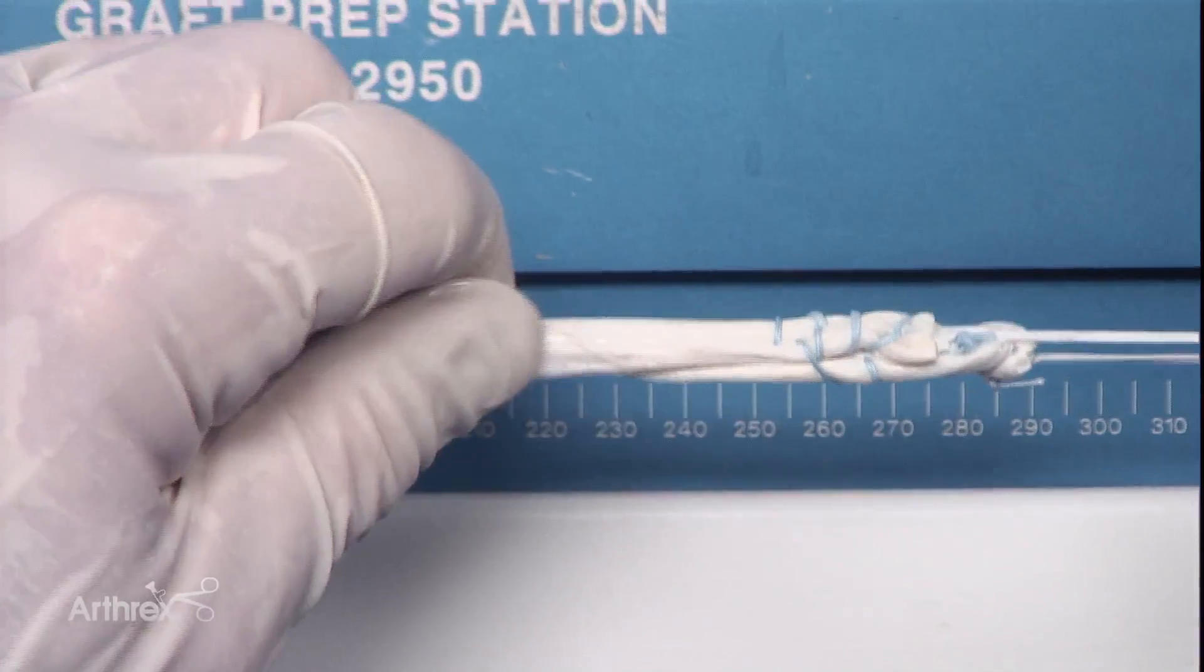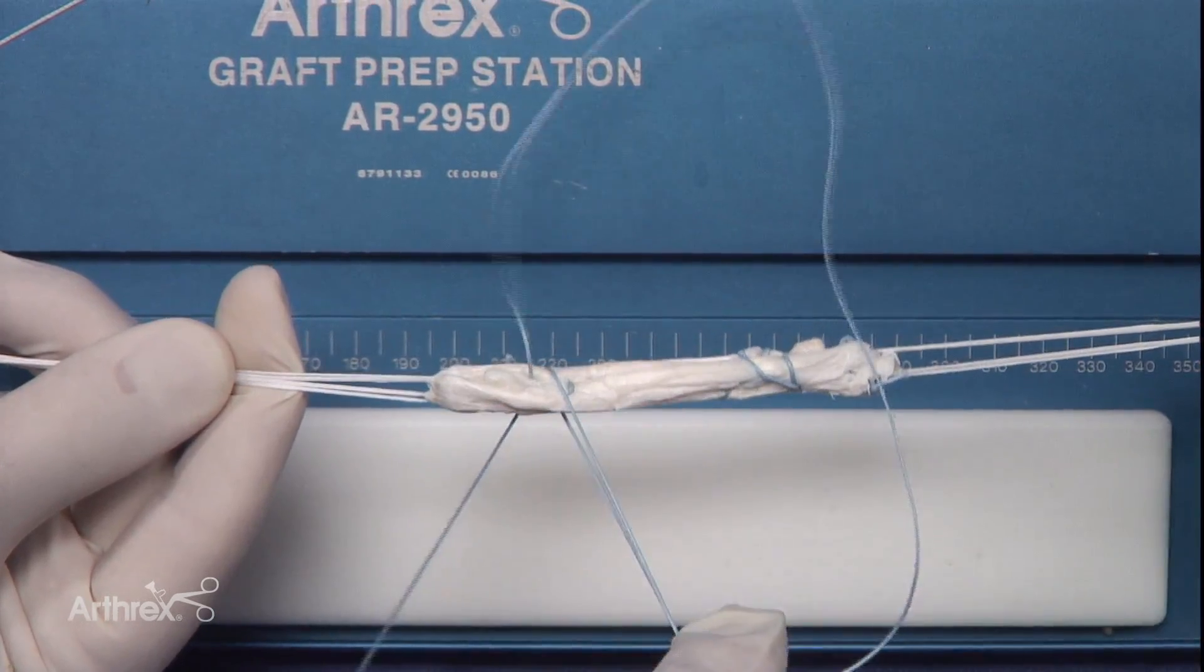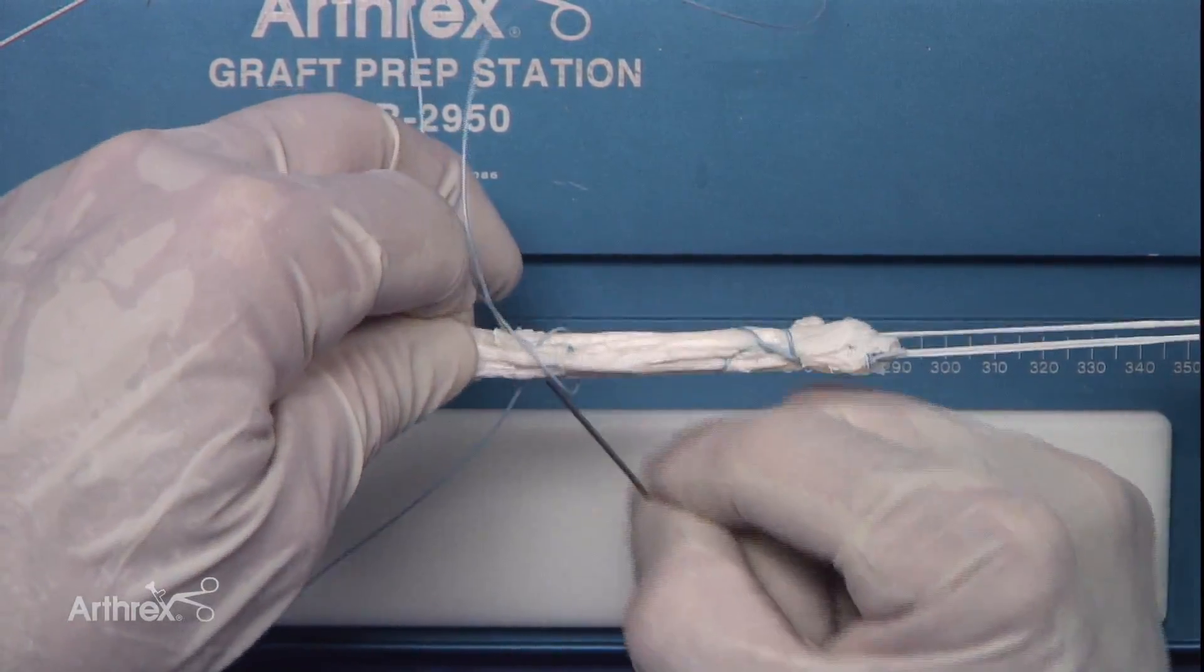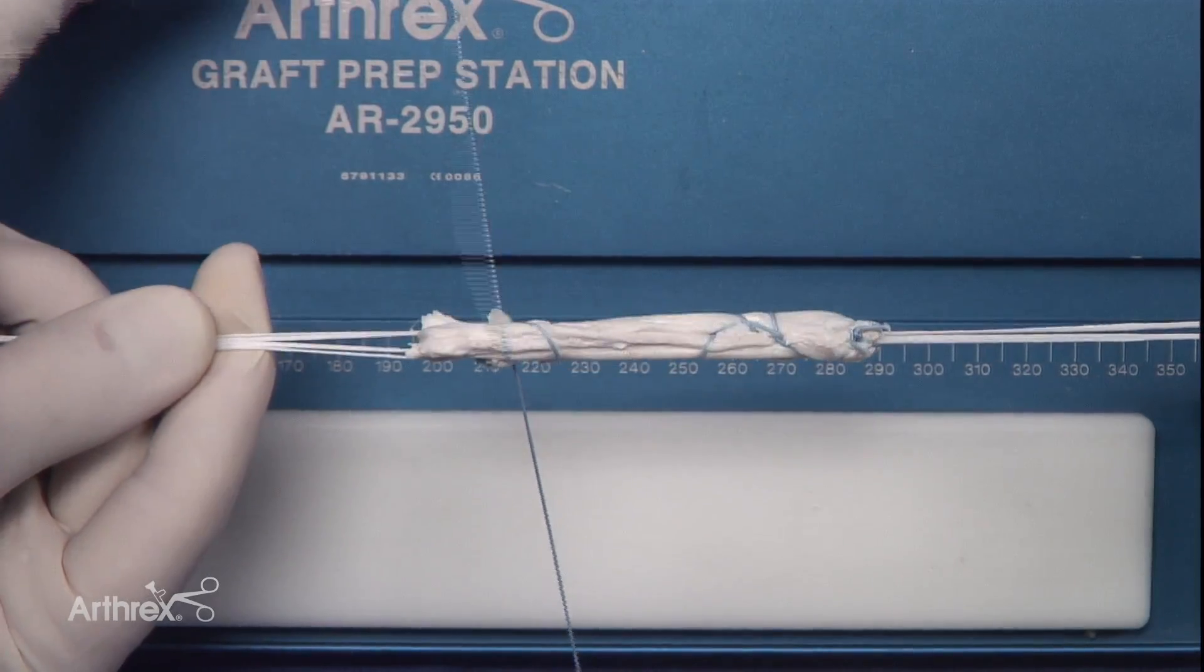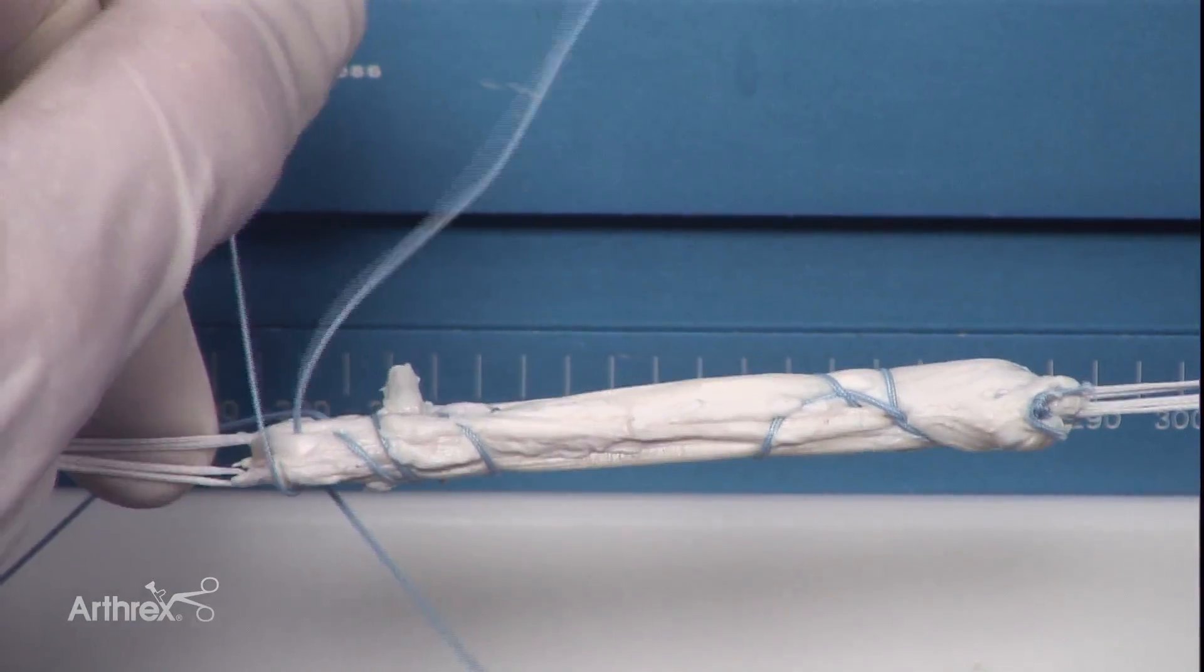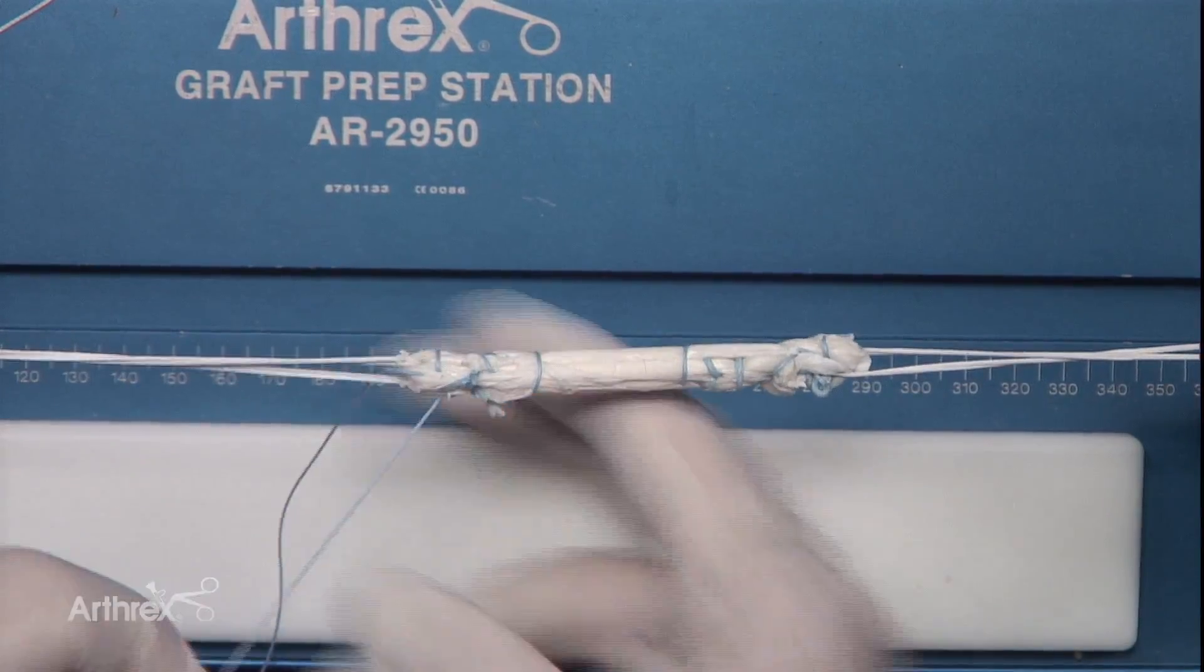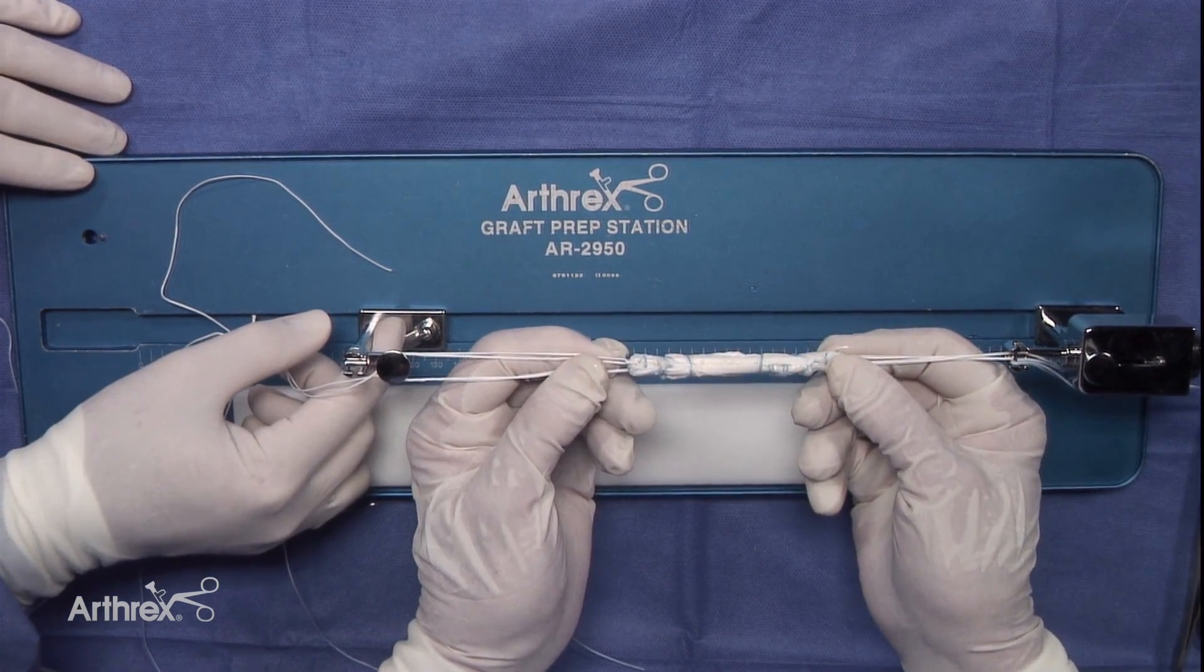Now we do the very similar thing to the opposite end. We're going to suture the other end again with the fiber wire. We're going to cross that, maintain our loop. We'll do a third one right at the end. We'll cut the end of that. So we have the final construct of the graft.